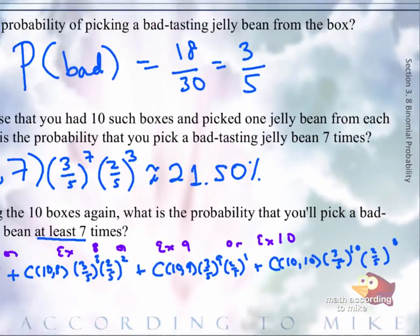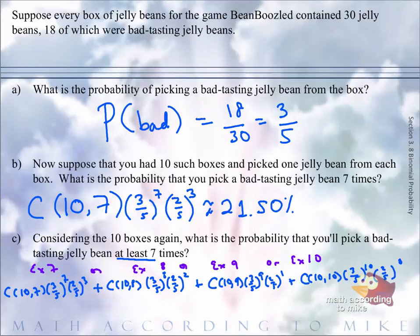So what would have to happen is we throw that all into the handy-dandy calculator. You can put it in one fell swoop, completely up to you. You should get approximately 38.23%. So there's a 38.23% chance that you have at least seven bad jelly beans when picking one jelly bean from 10 boxes.